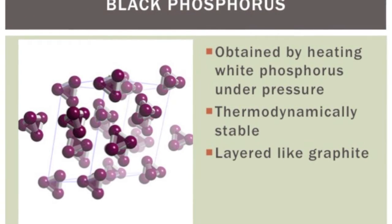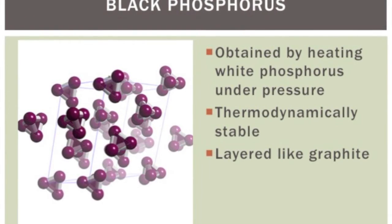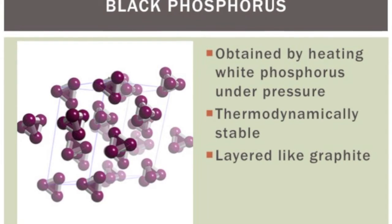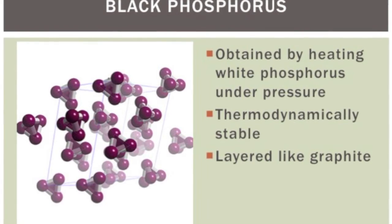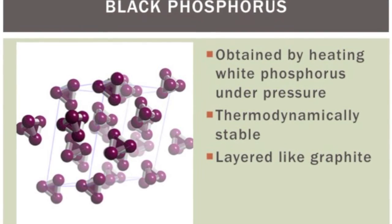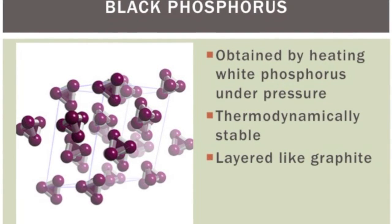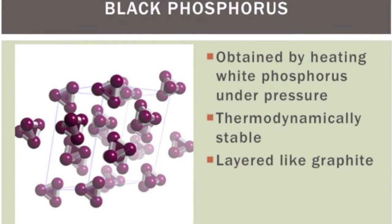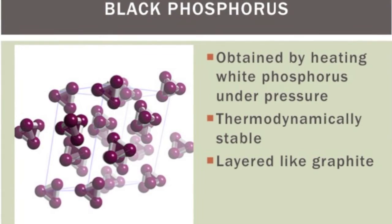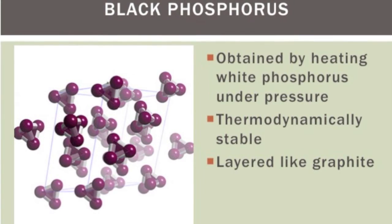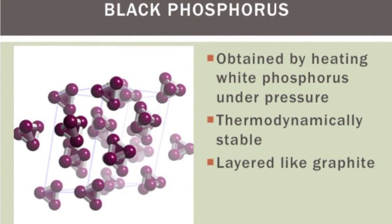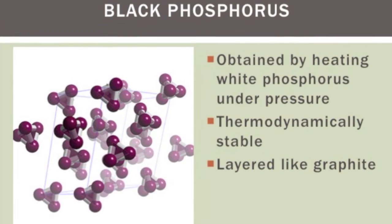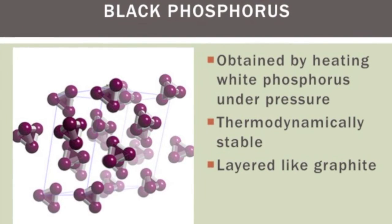Finally, we have our final allotrope, black phosphorus. This allotrope is unlike the other two because it is more thermodynamically stable, and it is also layered like graphite. It can be acquired by heating white phosphorus under pressure.